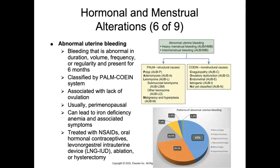Normally, someone with a uterus has menstrual bleeding every 28 days with variation up to seven days, so cycles of 21 to 35 days are considered normal. Abnormal uterine bleeding — defined by duration, volume, frequency, or regularity present for six months — is classified using the PALM-COEIN system. This is associated with people who fail to ovulate and experience irregular menstrual bleeding due to a lack of progesterone, and in certain cases an excess of estrogen.